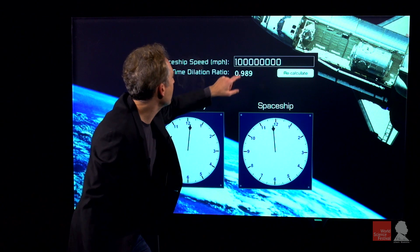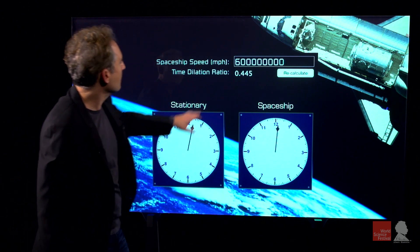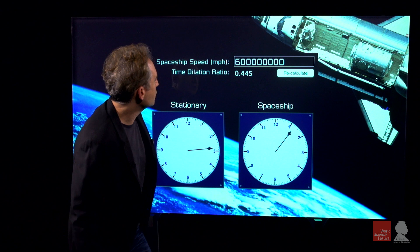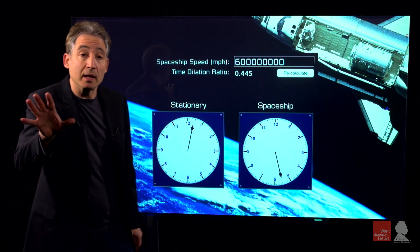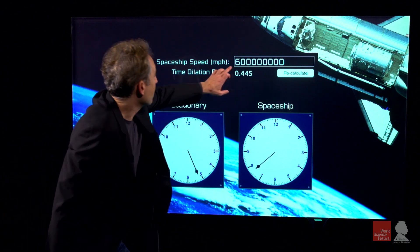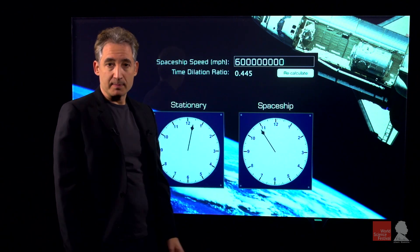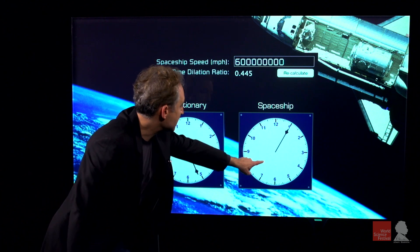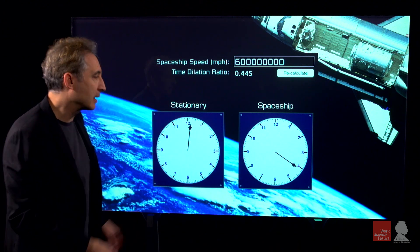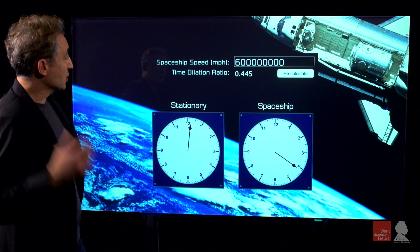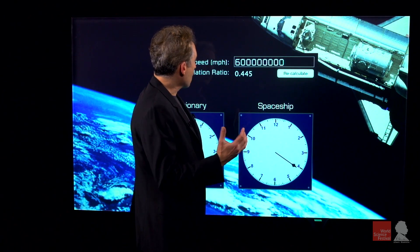So let's kick up the velocity of the ship even higher — let's bring it to 600 million miles an hour. The speed of light is about 670 million miles an hour. Now at this speed, the slowdown of time becomes obvious. This clock is ticking off time much slower than our clock here on Earth.